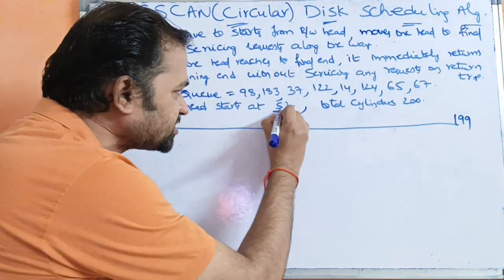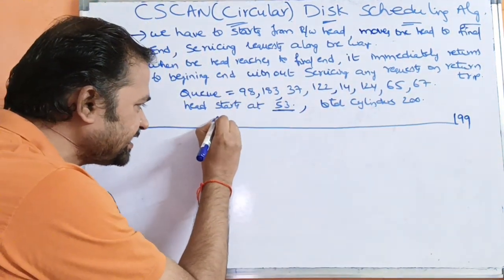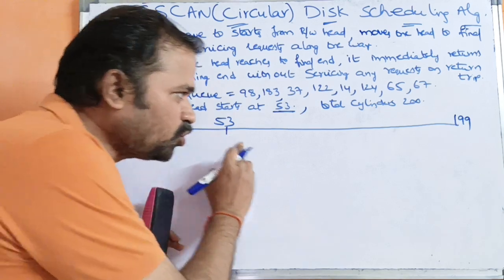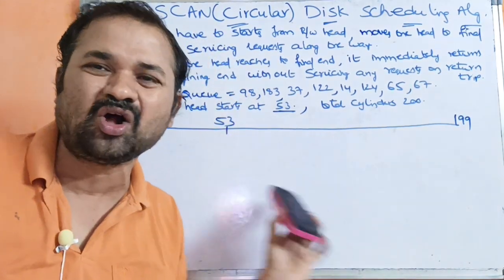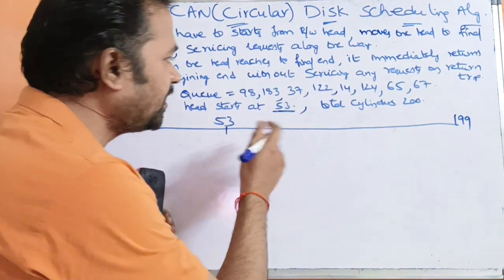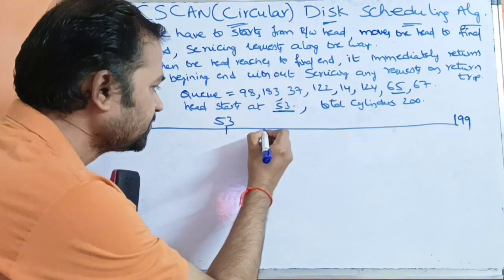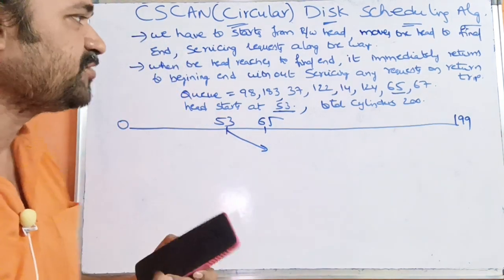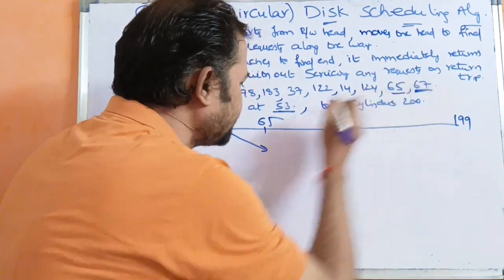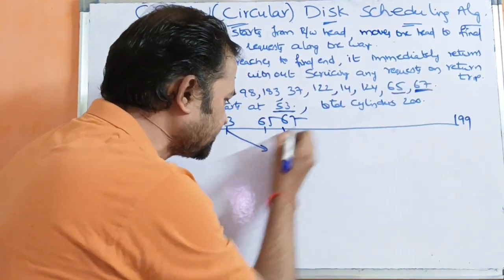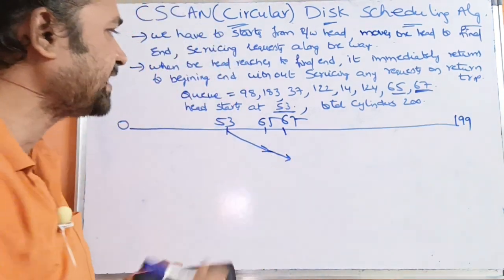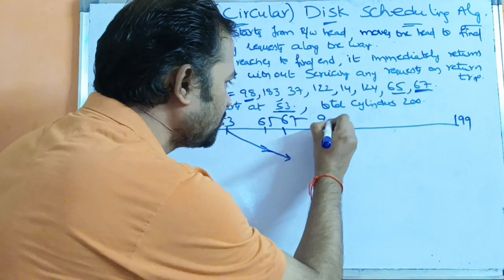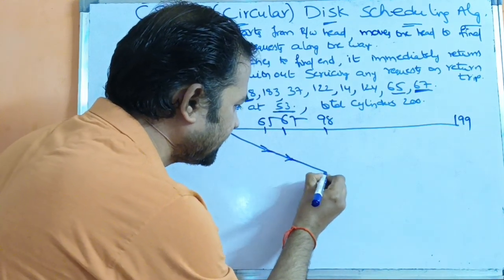The read-write head starts at 53. We move towards the final end of the disk, servicing all requests. After 53, the next request is 65, so we serve cylinder 65. Then we have 67, so cylinder 67 data is accessed. After that, we have 98, and next the 98 cylinder data is accessed.